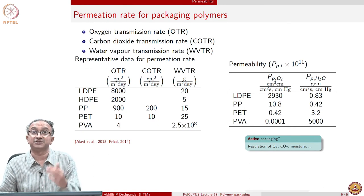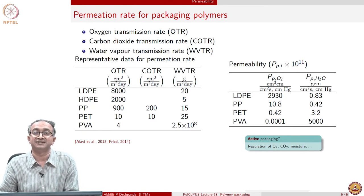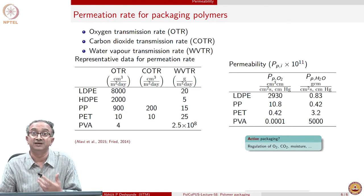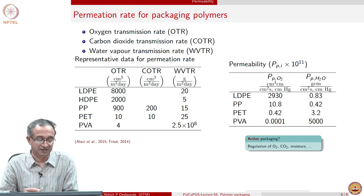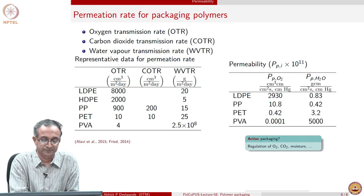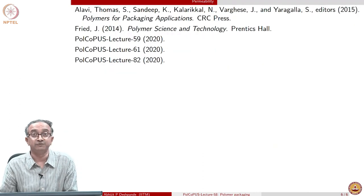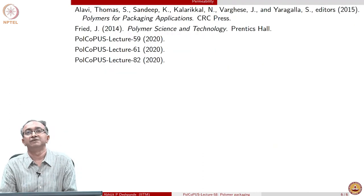Can active packaging material indicate to us, in addition to doing the barrier job, the concentration of certain substances? Or can it be a barrier for a certain amount of time and then non-barrier for another? These are research problems people are working on, where polymeric packaging materials can perform additional actions beyond the barrier job — such as providing information or smartly changing behaviour depending on requirement. You can try thinking about some of these applications based on your own experience. With this, we close this lecture on polymer packaging. Thank you.